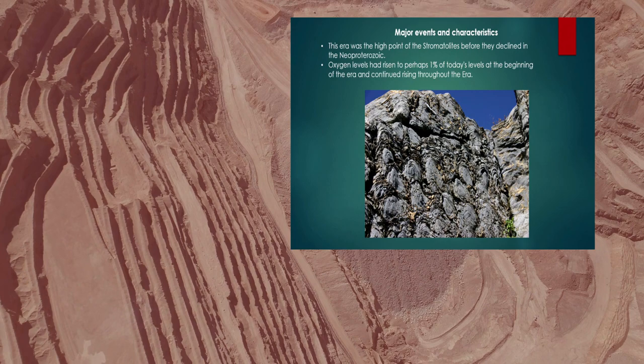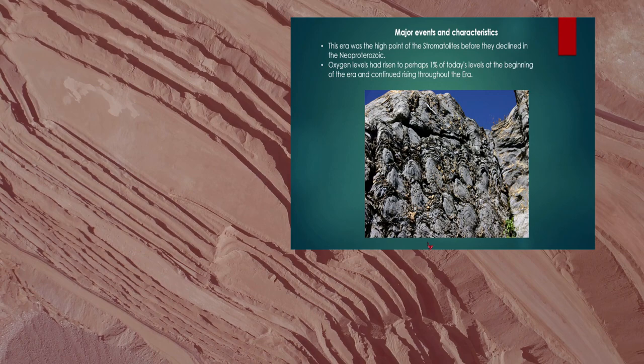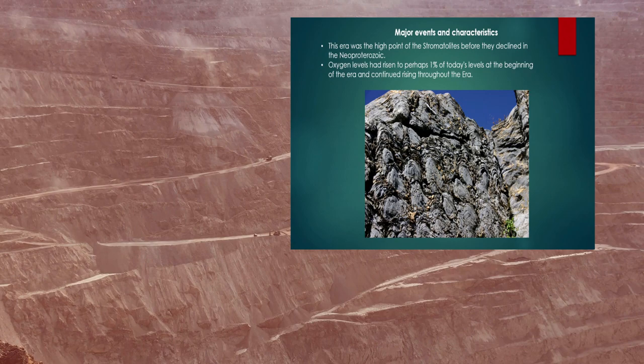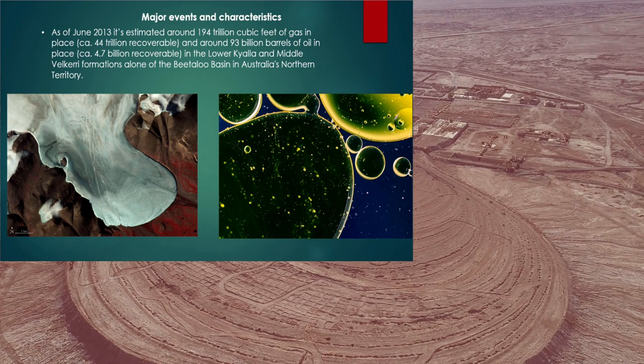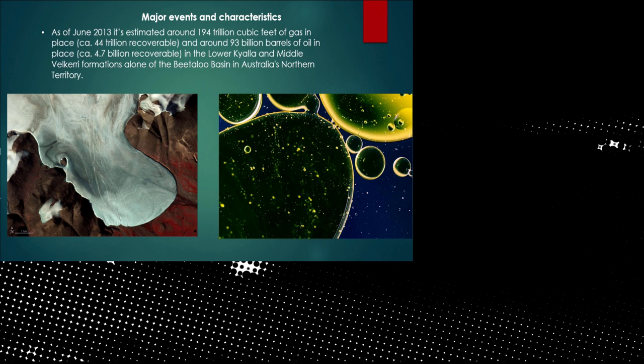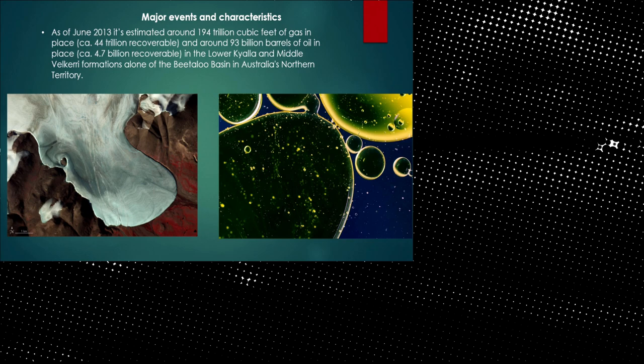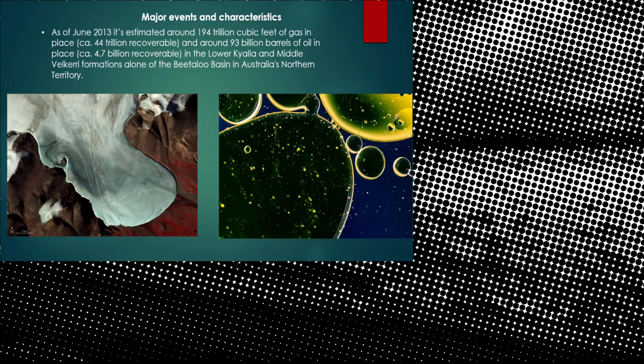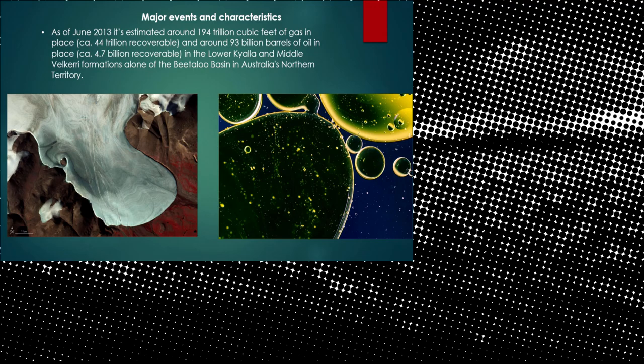As of June 2013, it's estimated around 194 trillion cubic feet of gas is in place and 44 trillion was recovered. Around 93 billion barrels of oil in place and 4.7 billion recoverable in the lower Kayla and the middle Valkyrie formations along the Betalu Basin in Australia's Northern Territory.